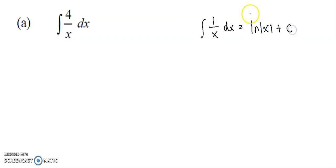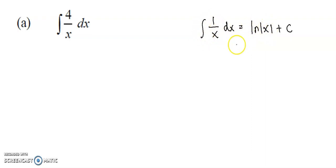How do I get this? Because from differentiation, if you differentiate log x, you get 1 over x. And integration is a reverse operation of differentiation. That's why the integral of 1 over x gives you log x.